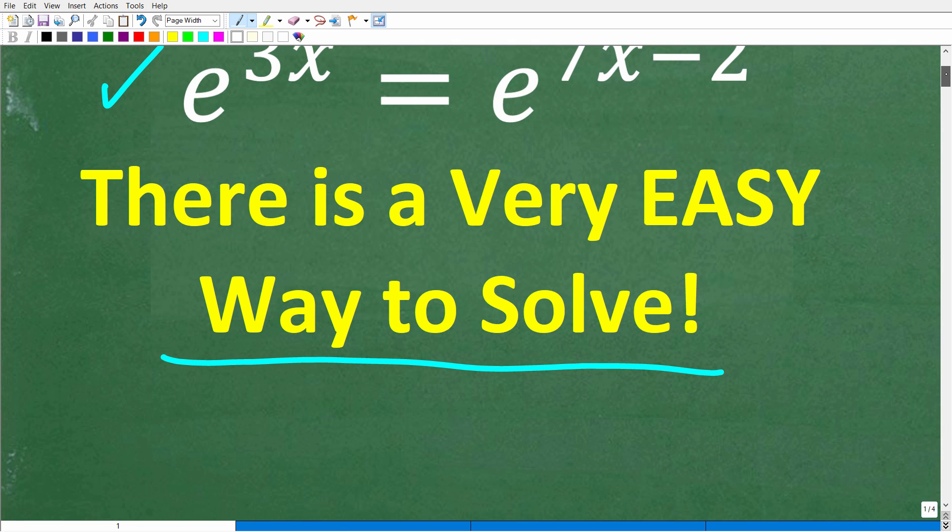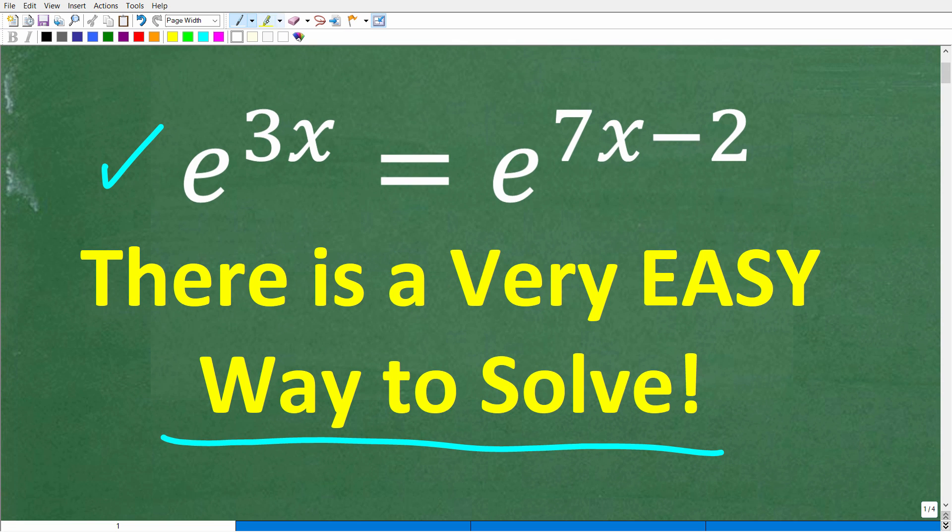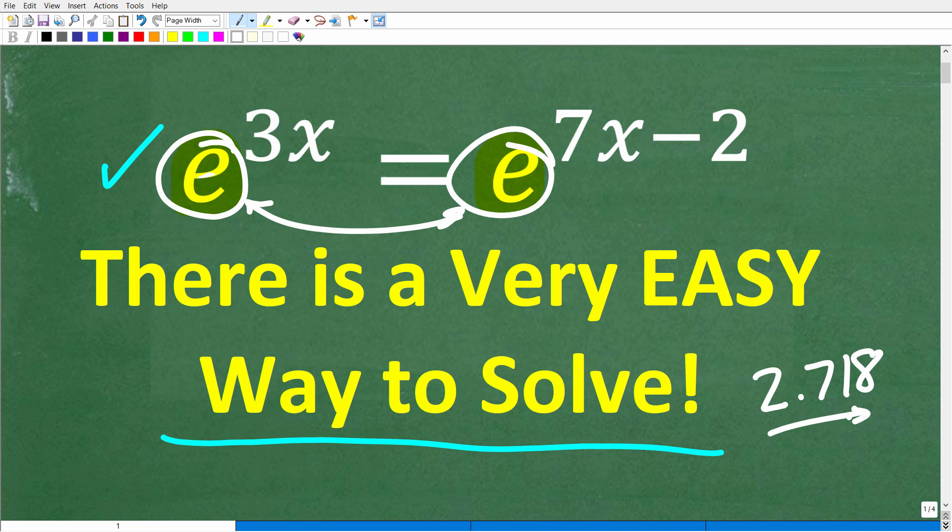Let's go ahead and take one more look at the problem before I show you the answer. So e to the 3x is equal to e to the 7x minus 2. Now, some of you may not be familiar with this e. What is this e business about? E is something called the natural base e. This is an extremely important value in mathematics. It's somewhere around, if my memory serves me correct, somewhere around 2.718. Of course, you can pull this up on your calculator, but it is a constant value, very much like pi.